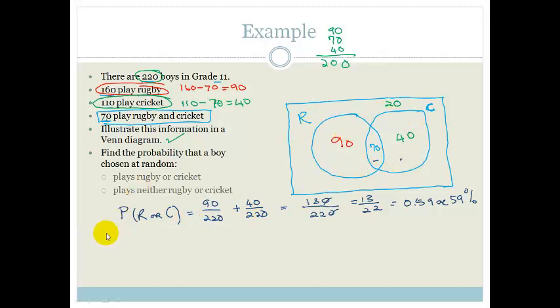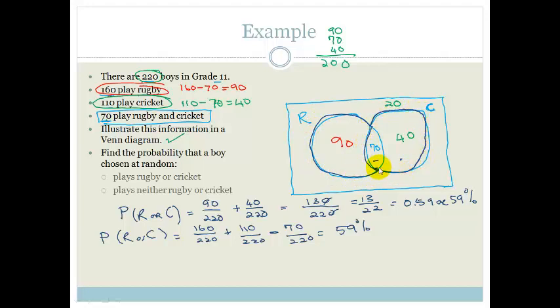The way that they did it on the notes is they did the last lesson. They went probability of rugby or cricket, there are 160 boys that play rugby out of 220 plus 110 play cricket over 220 minus the overlap of 70 over 220. And you will find you will get exactly the same answer of 59%. So by doing our Venn diagram we can say these dudes here play rugby and these dudes here play cricket. They went rugby or cricket, not rugby and cricket.